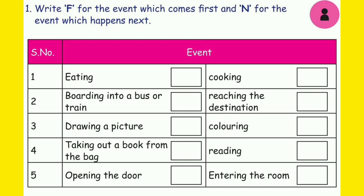Write F for the event which comes first and N for the event which happens next. First one: eating, cooking. Which one is first? Yes, first we have to cook. So write F for cooking and then we have to eat — write N for eating. Second one: boarding into a bus or train, reaching the destination. Which one comes first? Yes, first we have to board into a bus or train. After that, we can reach the destination. Write F for boarding into a bus or train and N for reaching the destination.